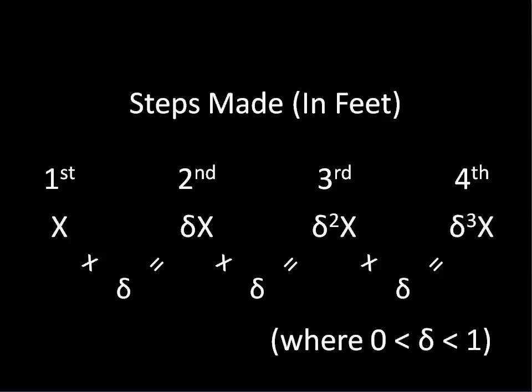Now let's generalize the halves. Maybe each step is two thirds as long as the last, or a quarter, or whatever. So now the first step is x feet, the second step is discount times x, the third step is discount squared times x, and the fourth is discount cubed times x. And we have this rule that discount must be between zero and one.